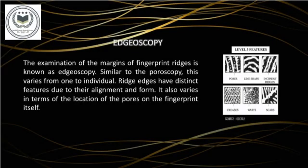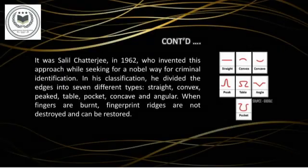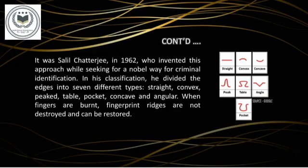Edgoscopy is the study of the margins of fingerprint ridges. Similar to poroscopy, this also varies from one individual to another. Every ridge edge has distinct features because of its alignment and form. It also varies in terms of the location of the sweat pores on the fingerprint. In 1962, Shyamlal Chatterjee invented this approach while he was seeking a novel way for identifying criminals. According to his classification, he divided the edges into seven different types: straight, convex, peaked, table, pocket, concave, and angular. Even when the fingers are burned, the fingerprint ridges do not get destroyed and can be restored back.